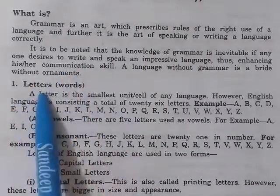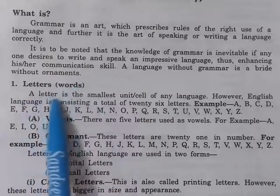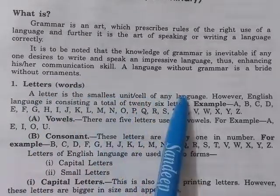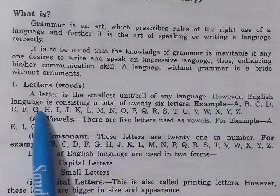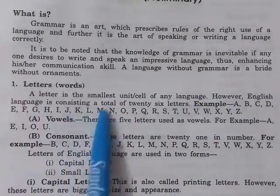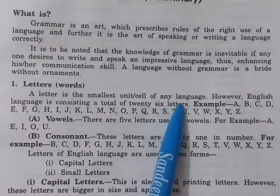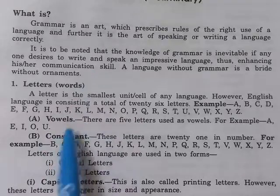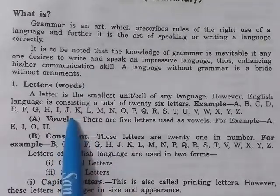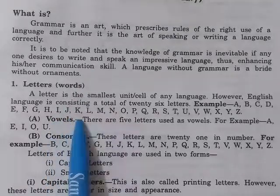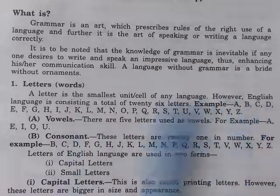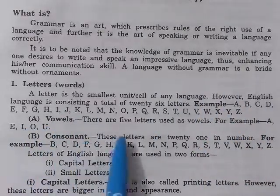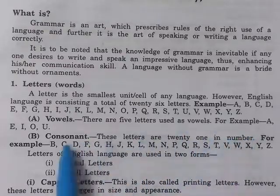What are letters or words? A letter is the smallest unit or smallest cell of any language. The English language consists of a total of 26 letters, A to Z. Vowels and consonants: there are 5 letters used as vowels — A, E, I, O, U — and consonants, which are 21 in number.